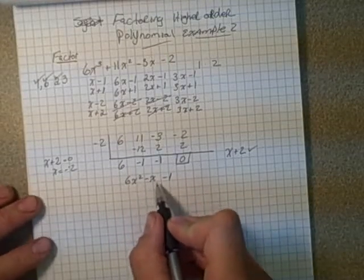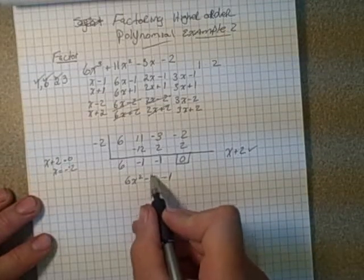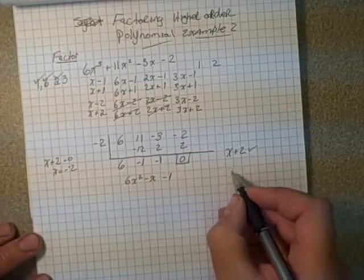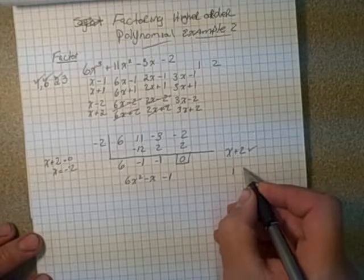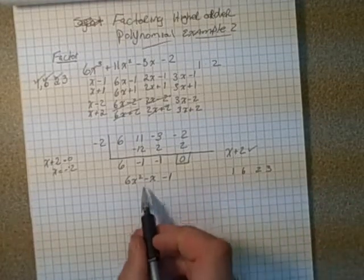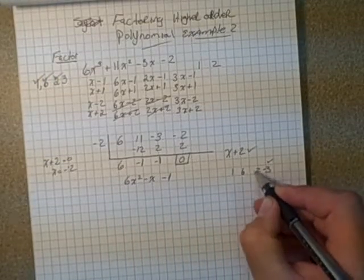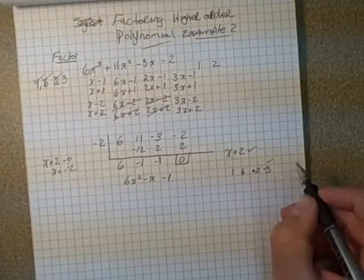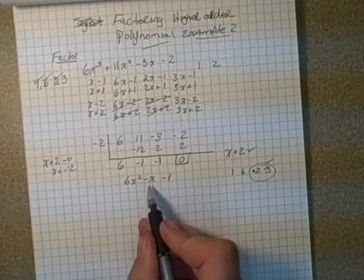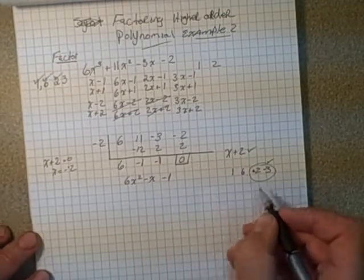We need to break this negative 1X into factors that would have negative 6. So the factors of 6 are 1 and 6 and 2 and 3. We have to use the two factors that would give us a negative 1, and that would be a negative 3 and a positive 2. If we break that and put these two factors in place of the negative X, we can use the decomposition method.